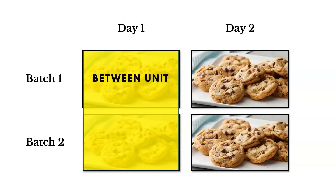Between unit variation is when, on day one between the two batches, one batch was overcooked and one was undercooked. We'd ask: what changed on that day between batches? Did the oven temperature change? Did we allow one batch to sit out longer than the other? What might have caused the variation between units? Again, it gives us clues about where our problem might exist.